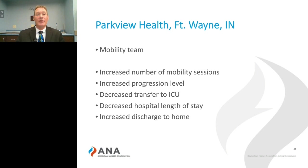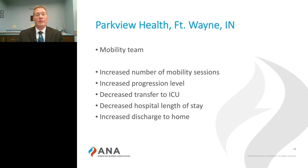They submitted their data for publication — this is unpublished data from their CNS team. What they found was an increased number of mobility sessions, increased progression of patient levels, decreased transfer to the ICU, decreased hospital length of stay, as well as increased discharge to home as opposed to an extended care or rehab facility. That middle finding — decreased transfers to the ICU — suggests this intervention may help slow or stop the progression of the disease.